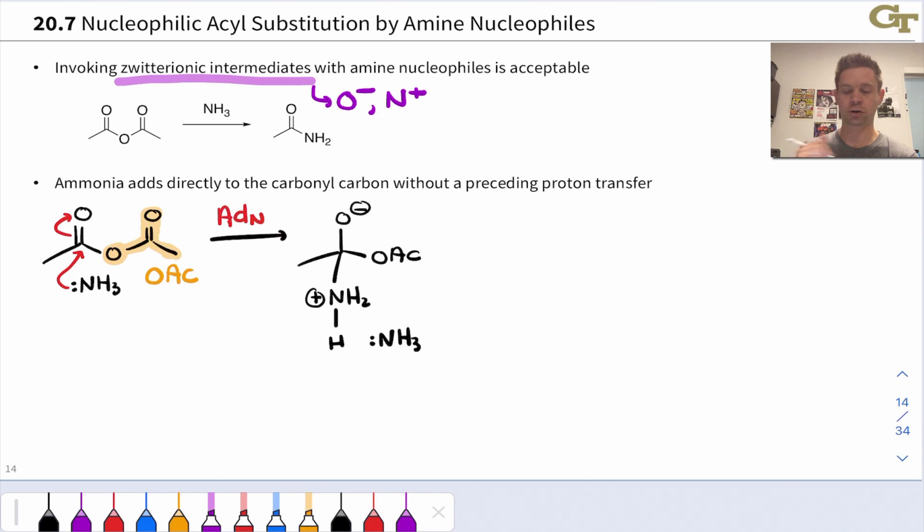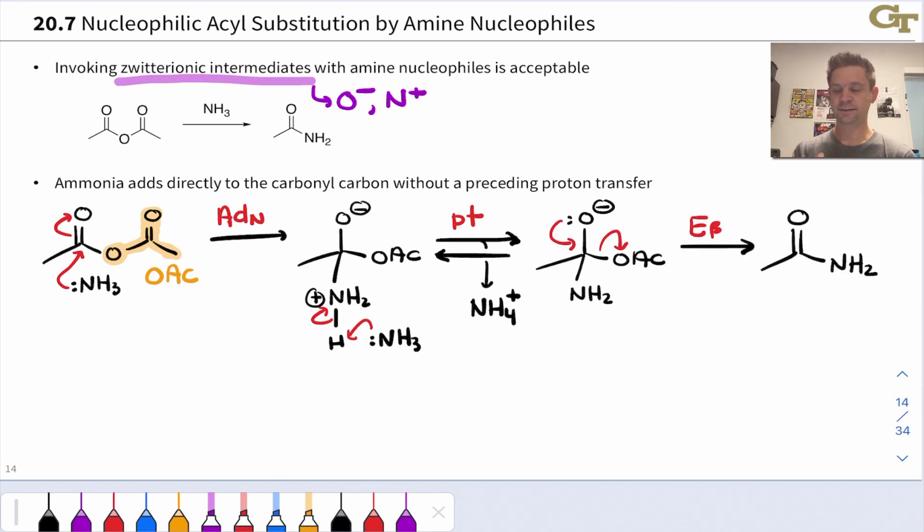So nucleophilic addition occurs first. And this is unique to amines, really, right? We end up with this zwitterionic intermediate with an O minus and an N plus. Now a couple of proton transfers set up elimination. So first, we lose a proton off of that nitrogen and NH4 plus is a byproduct here. And now we can eliminate off that acetate group, OAc minus. And this produces, in this case, an amide product with an NH2 there.